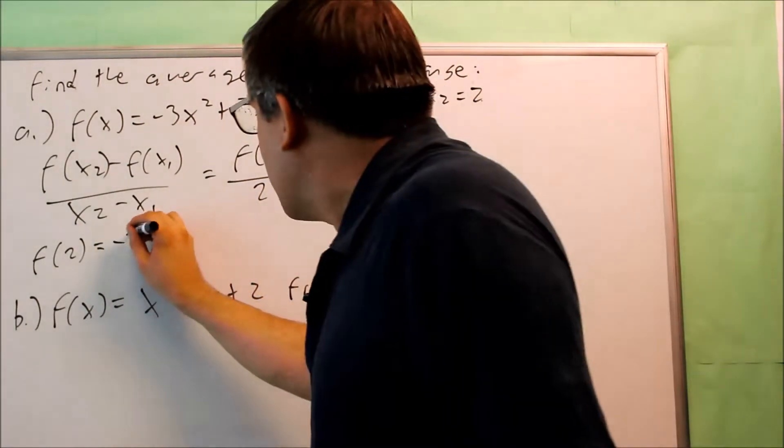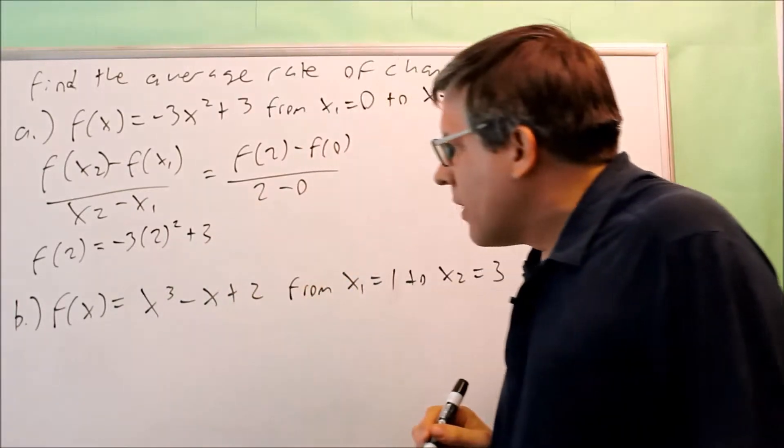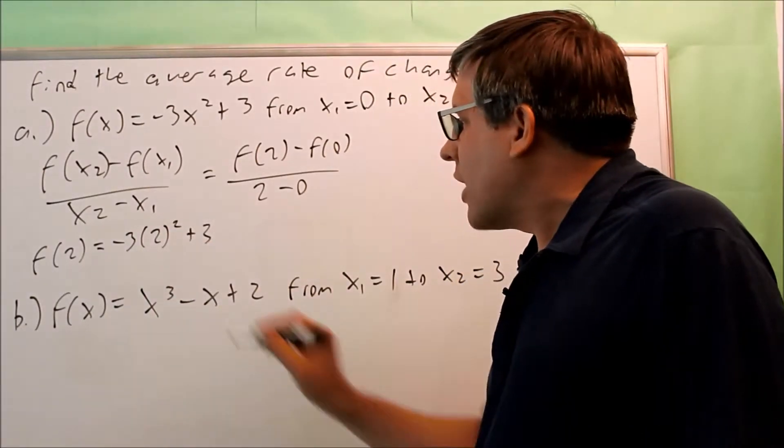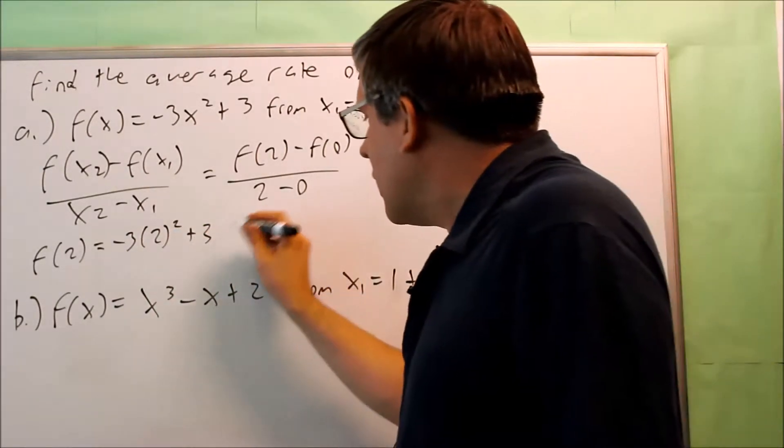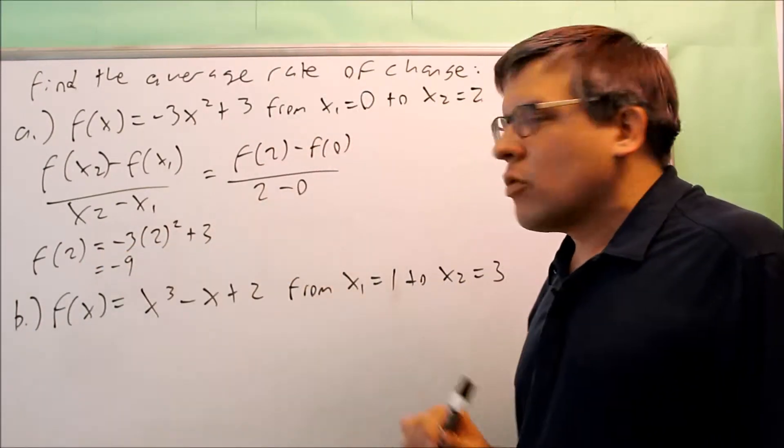Now f of 2 means that we're going to put 2 into this equation in place of all the x's. So that's going to give us negative 3 times 2 squared plus 3. If we simplify it, we get negative 3 times 4. So that's negative 12 plus 3 gives us negative 9. So I know that f of 2 is equal to negative 9.